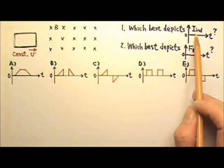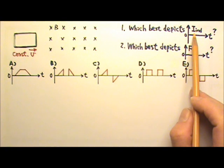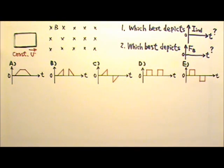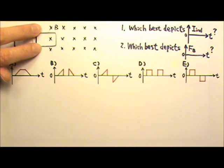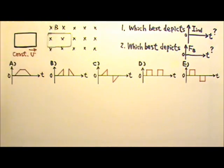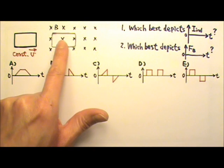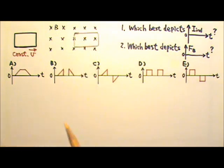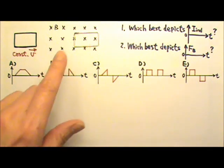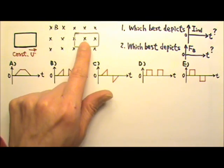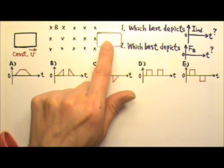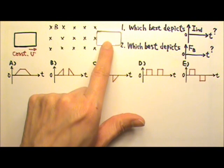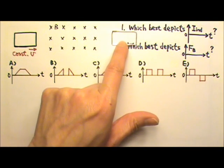Number one: the induced current depends on the magnetic flux change. At first there is no flux through the loop, and then still no flux, and then the loop starts to enter the magnetic field so the flux starts to increase. Then the loop has the same magnetic flux the entire time while fully inside, so the flux is constant. Then the flux starts to decrease as the loop comes out, and once completely outside, the flux stays at a constant zero.